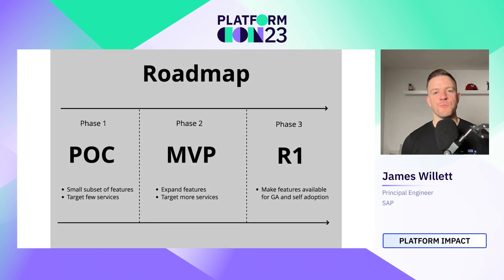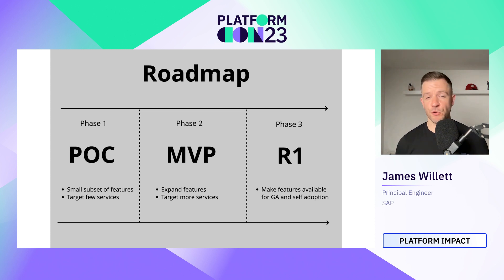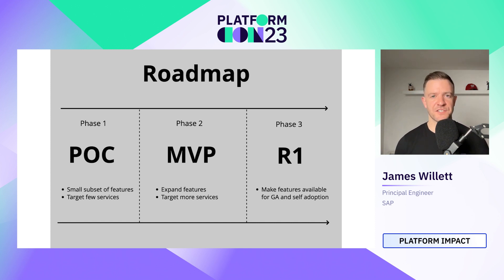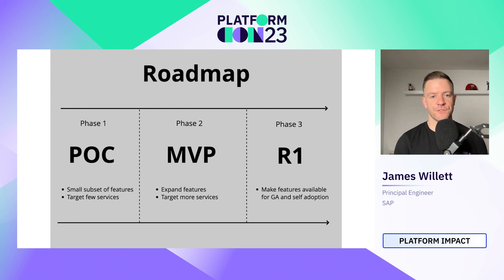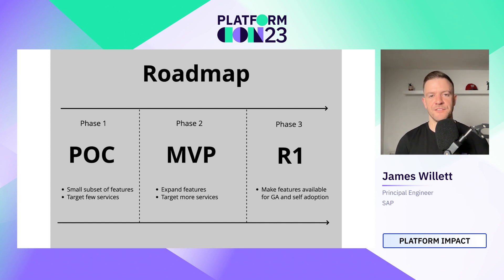From that, we built out our roadmap in three distinct stages. Phase one was a proof of concept where we chose a very small subset of features to implement initially, targeting only very specific services rather than opening up the platform to everyone straight away. Moving into phase two — our MVP phase — we expanded on the features, continuing to mature and develop what we implemented in the POC, and started targeting more services to onboard.